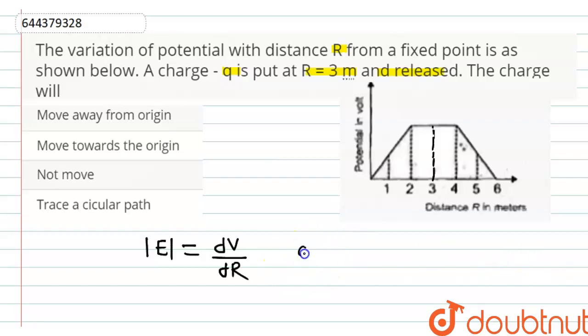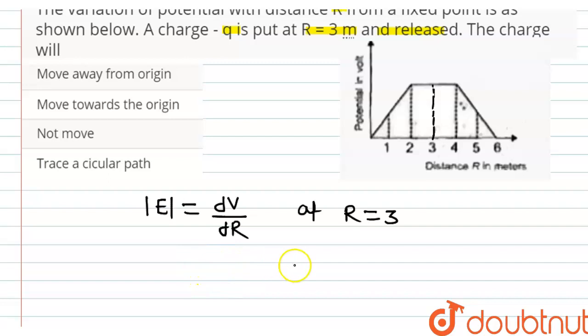Now, at r equals to 3, the value of dV by dr, as V is constant, the value of dV by dr is equal to 0.